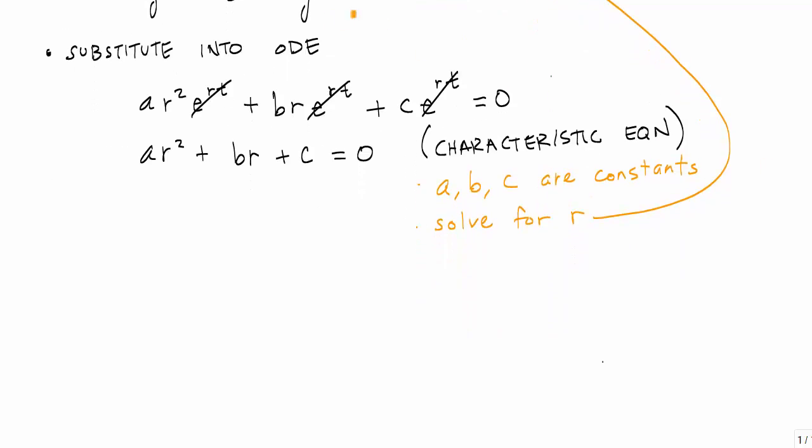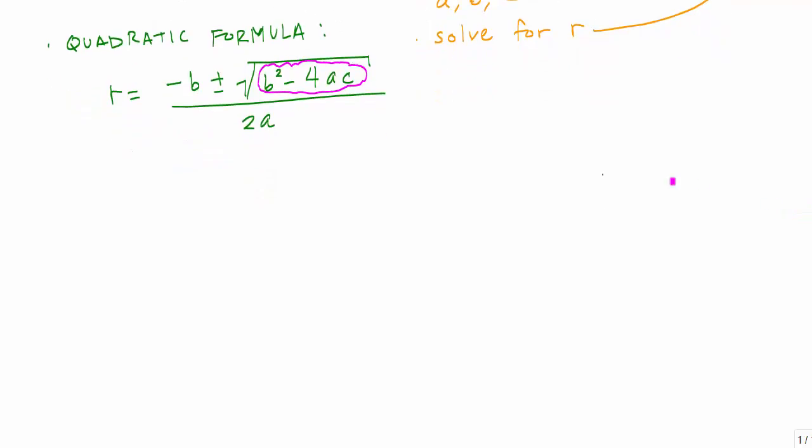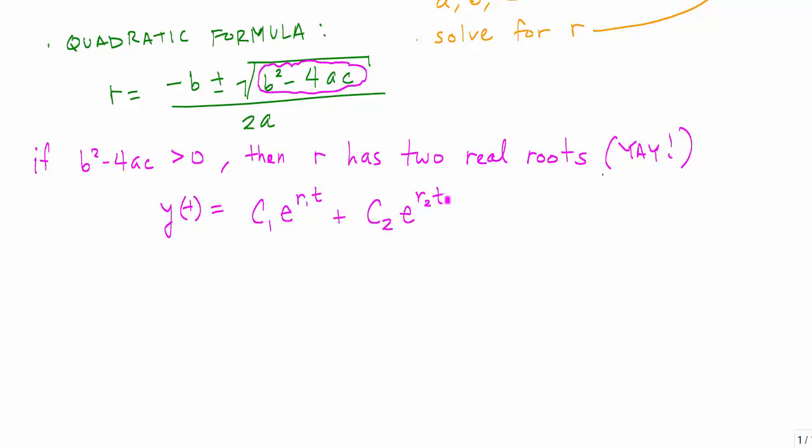And the way we solve for that, it's simple. It's a quadratic formula. So the quadratic formula, r = (-b ± √(b² - 4ac))/(2a). And this thing really just, the solution or how we treat the solution depends very much on what's happening inside the square root right here. And there's a bunch of if statements. It's like a little program. If b² - 4ac is greater than zero, then we have positive roots. They're real and positive. We have two of them. The solution is just simply y(t) = C₁e^(r₁t) + C₂e^(r₂t), where r₁ and r₂ are these roots.